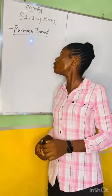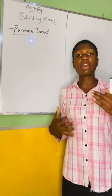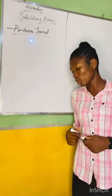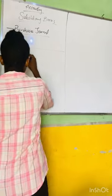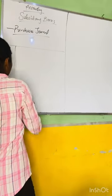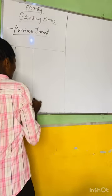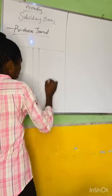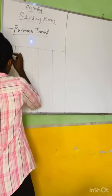The format is very similar to that of the sales day book. For the purchases journal, we have our date, our particulars, folio, our details, and amounts.